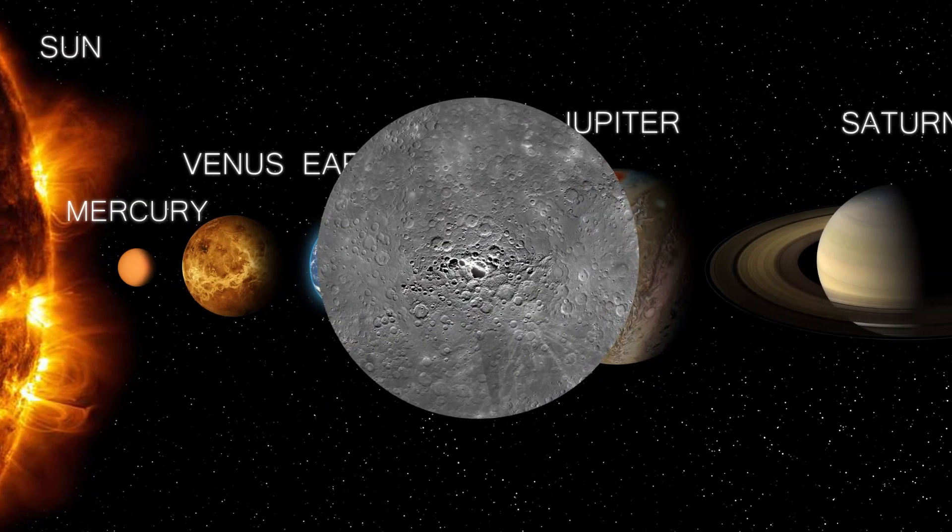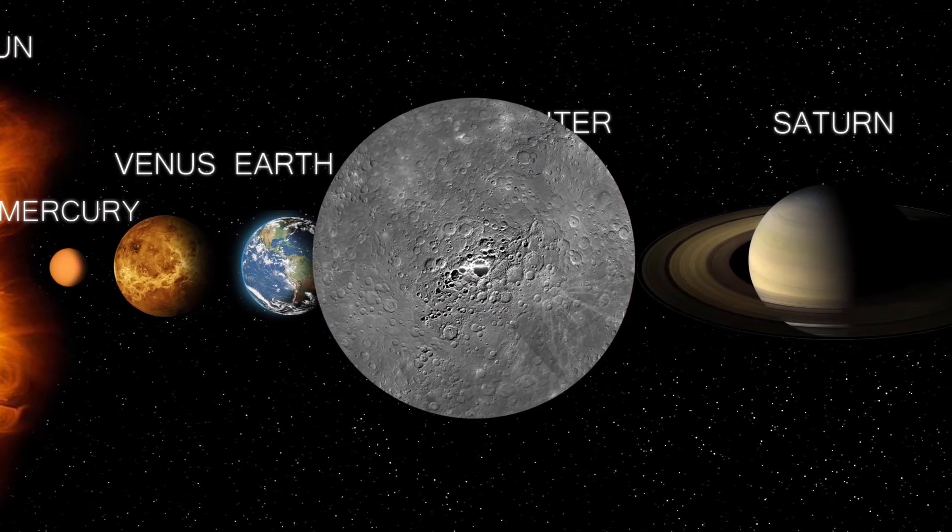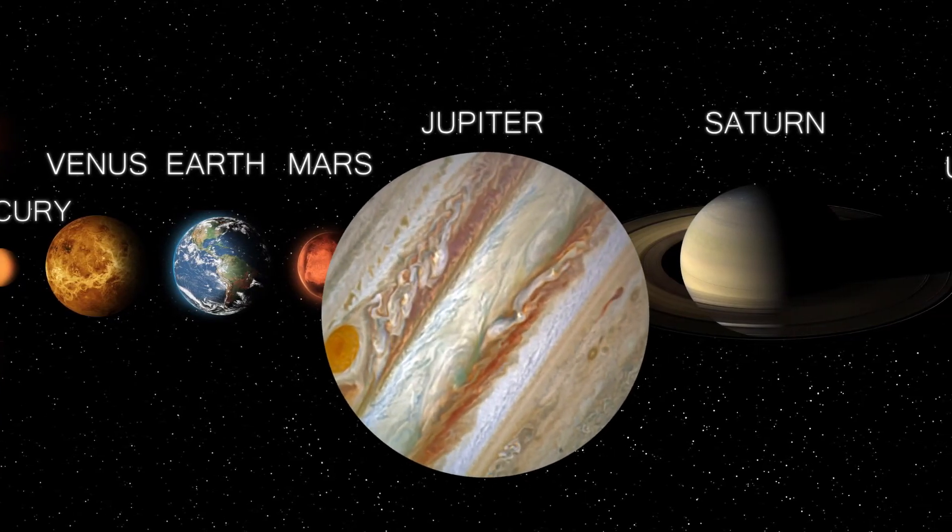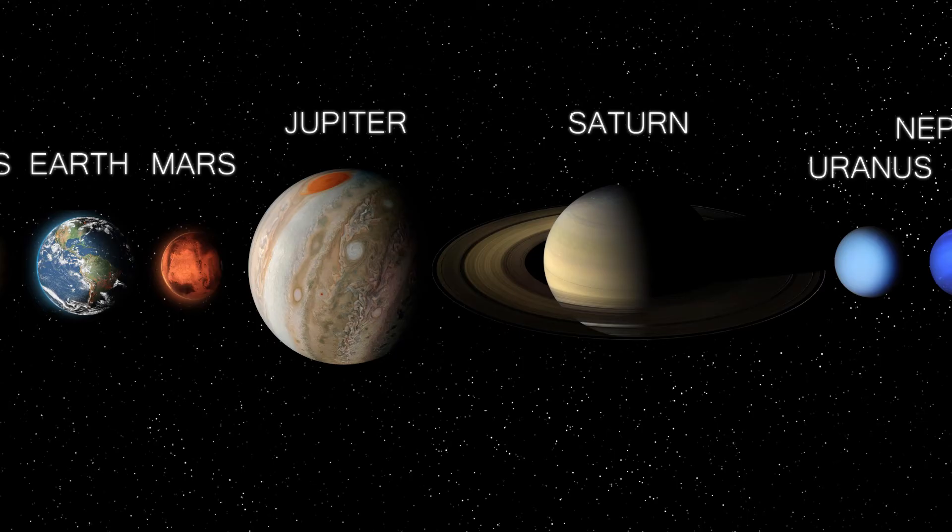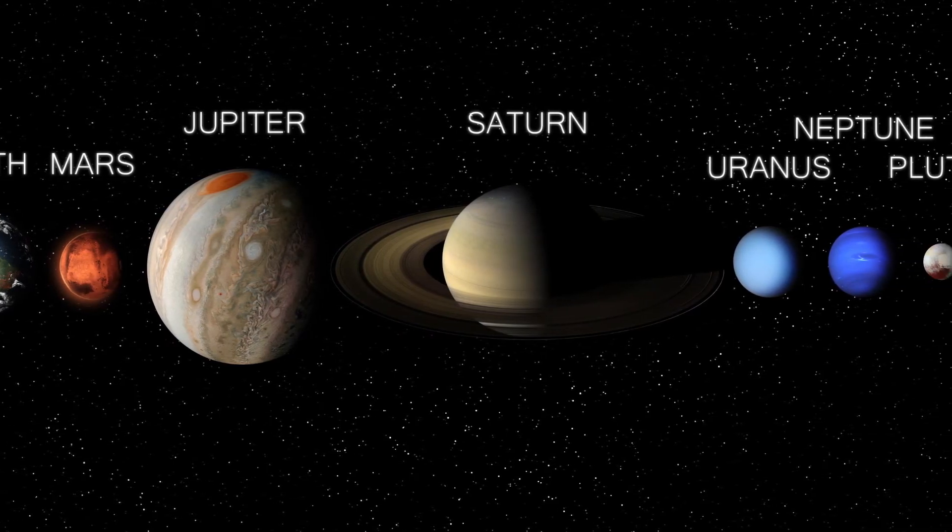From hot, rocky Mercury with almost no atmosphere, to the cold, gas giant Jupiter, which is currently thought not to have a solid surface, each planet has amraha, its own orbit and characteristics.